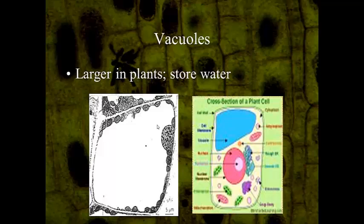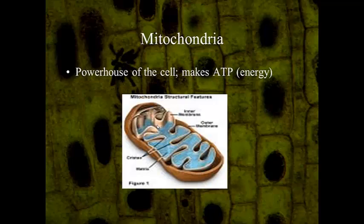Vacuoles are larger in plant cells and used to store water. You may be asked tomorrow how you know when a plant needs water — it's because the vacuole will be shrunken, the plant will be wilted, and cellularly, the cells have run out of water to fill the vacuole to maintain the shape of the cell. The mitochondria is the powerhouse of the cell.